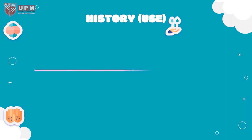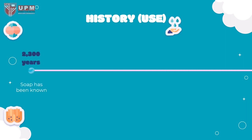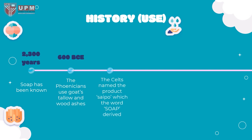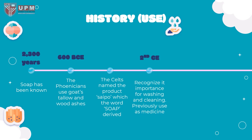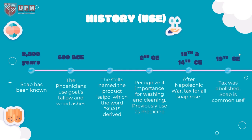History of soap uses. Soap has been known for at least 2,300 years. In 600 BC, the Phoenicians used goats' tallow and wood ashes to make soap. The word soap derived from the Celts, whose name for their products was 'saipo'. However, in the 2nd century, the importance of soap for washing and cleaning was only being recognized — previously it had been used as medicine. In the 13th and 14th century, there was a tax for every soap produced. After the Napoleonic War, the tax on all soap rose. However, in the 19th century, the tax was abolished and soap became common use.